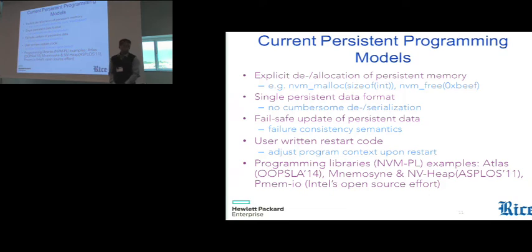Many different work has gone into building up programming libraries that would enable programmers to exploit this persistence directly. So many of these programming APIs, programming libraries support the following common programming model. They allow explicit allocation and deallocation of persistent memory using familiar allocation interfaces. They allow the programmer to manipulate persistent data in the same format as it is stored, thanks to byte addressable NVRAM. They also provide mechanism to programmers to update persistent data in some fail-safe manner. So they define some kind of failure consistency semantics. So then programmer might write restart code which enables the program to adjust its programming context and start from persistent data that is available after a failure or through power cycle. So it's a persist and reuse model.